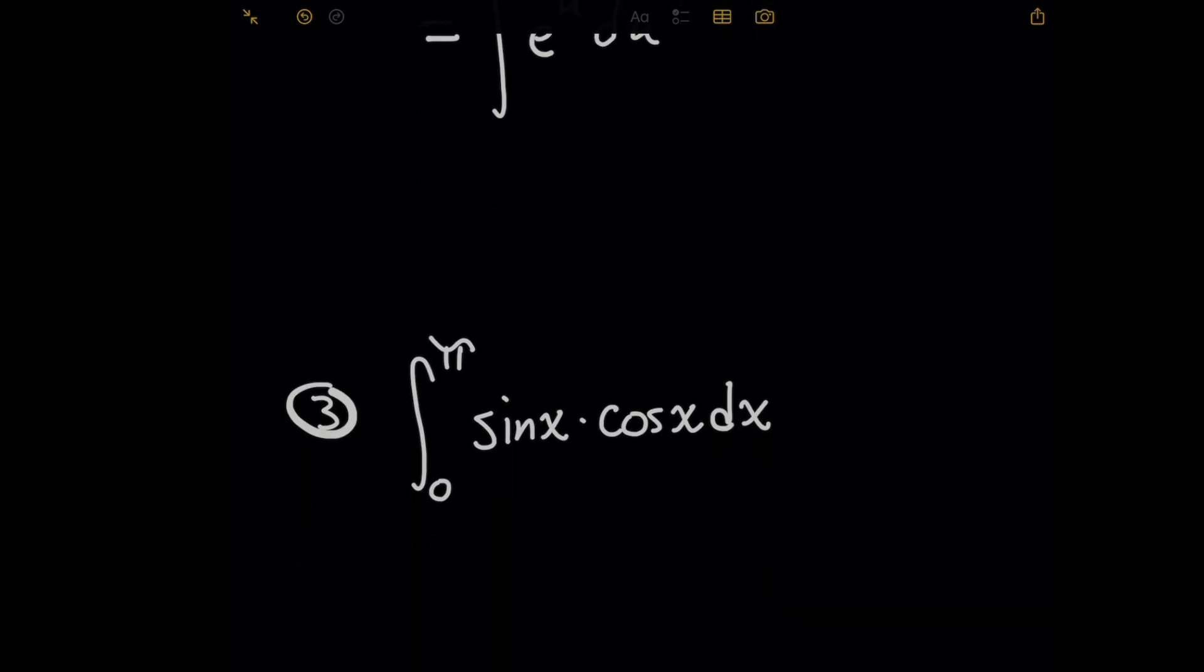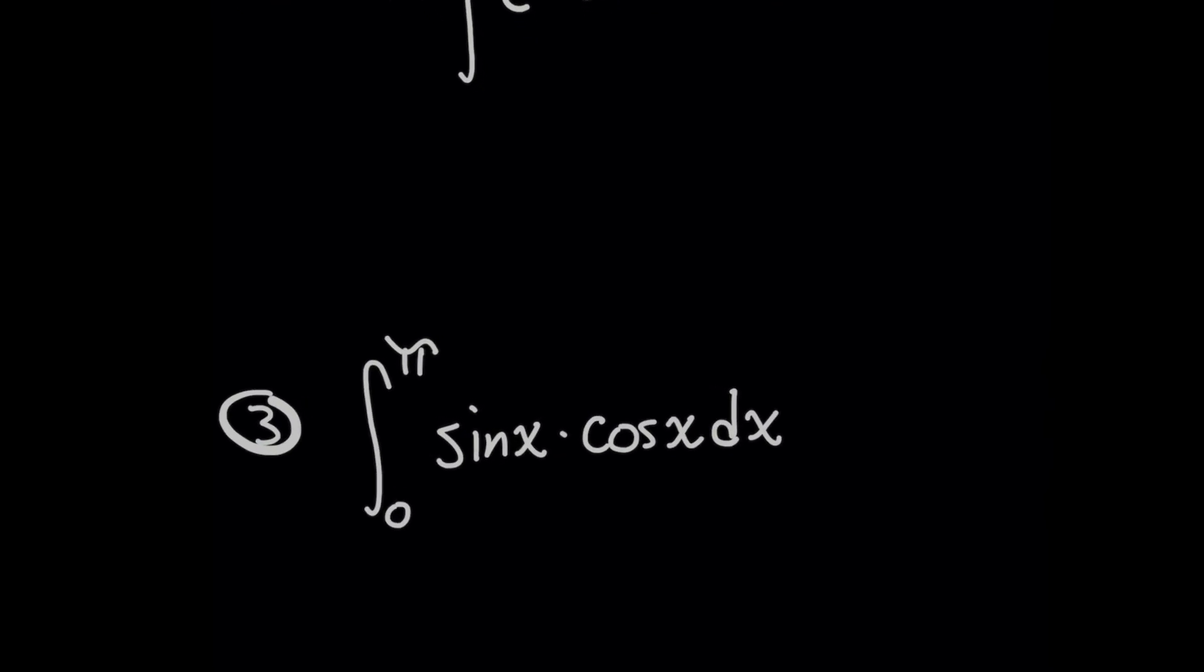So let's move on to the next problem here, the integral from 0 to pi of sine of x times cosine x dx. We are going to try a u substitution method again here, and let's see if it actually works this time.